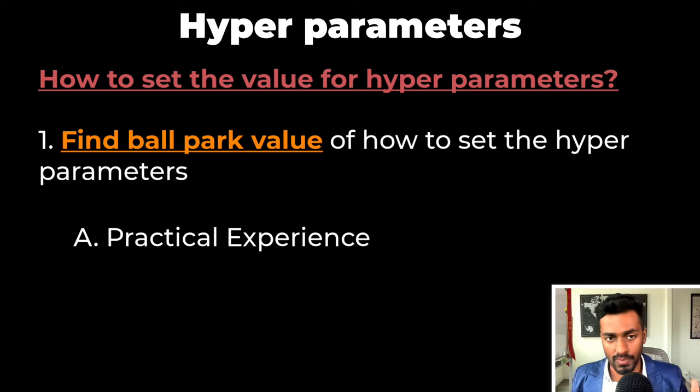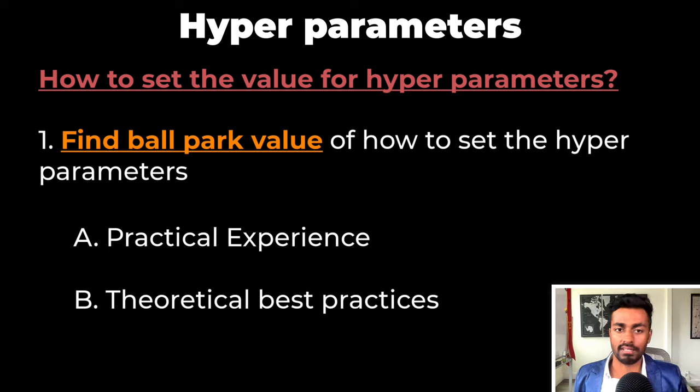To get some ballpark estimate, I see two main ways. The first is practical experience, like looking at other machine learning engineers' code and building some intuition of your own. The second way is through theoretical best practices, including seeing the configuration in research papers related to problems and models similar to the one you're trying to solve.